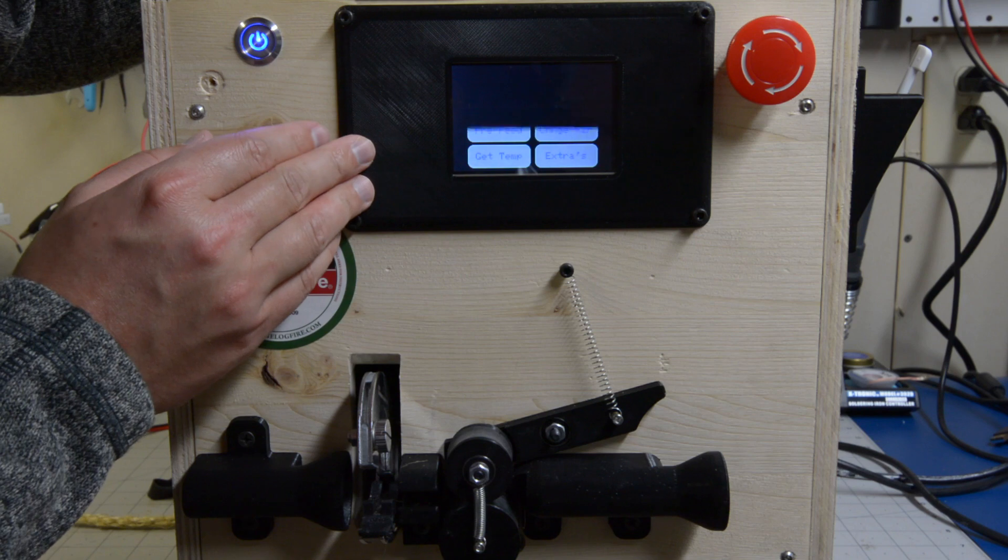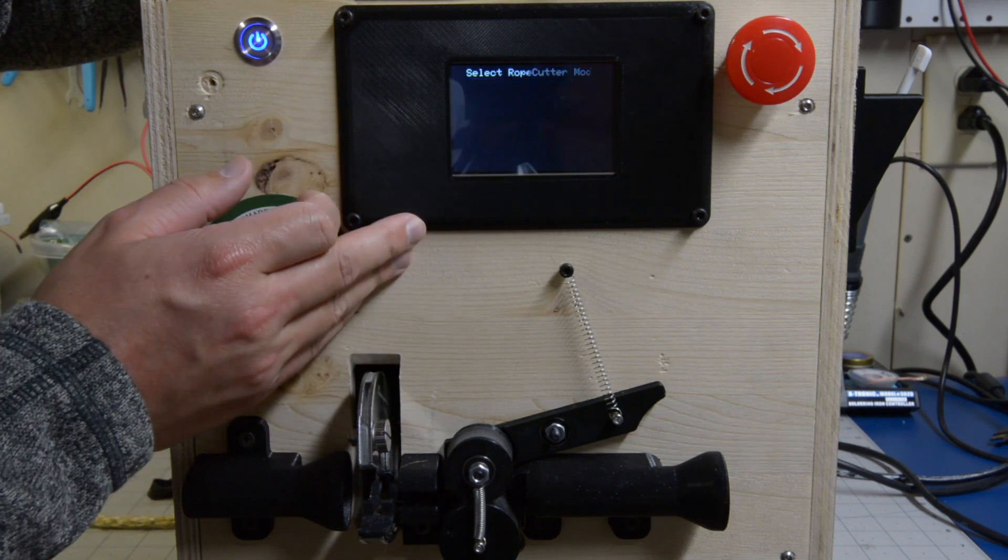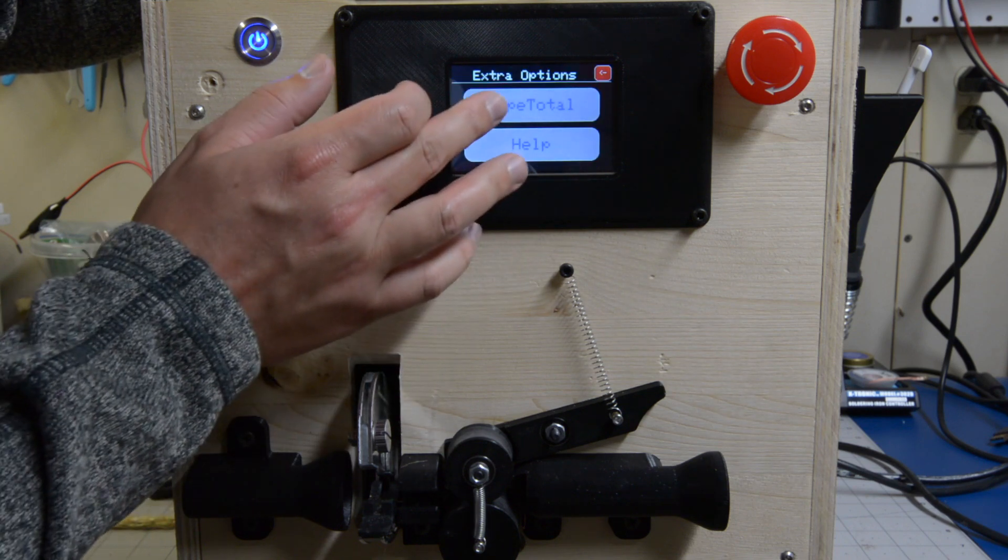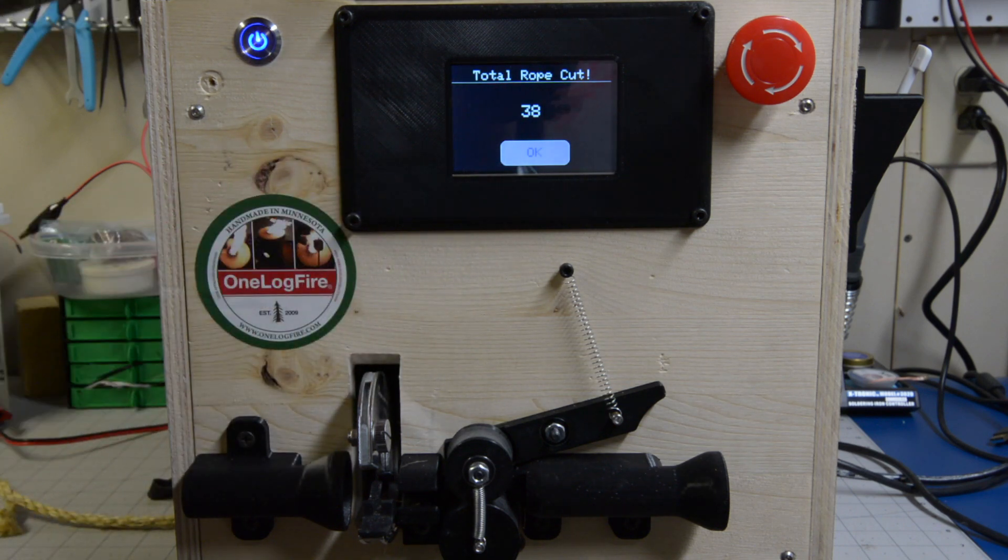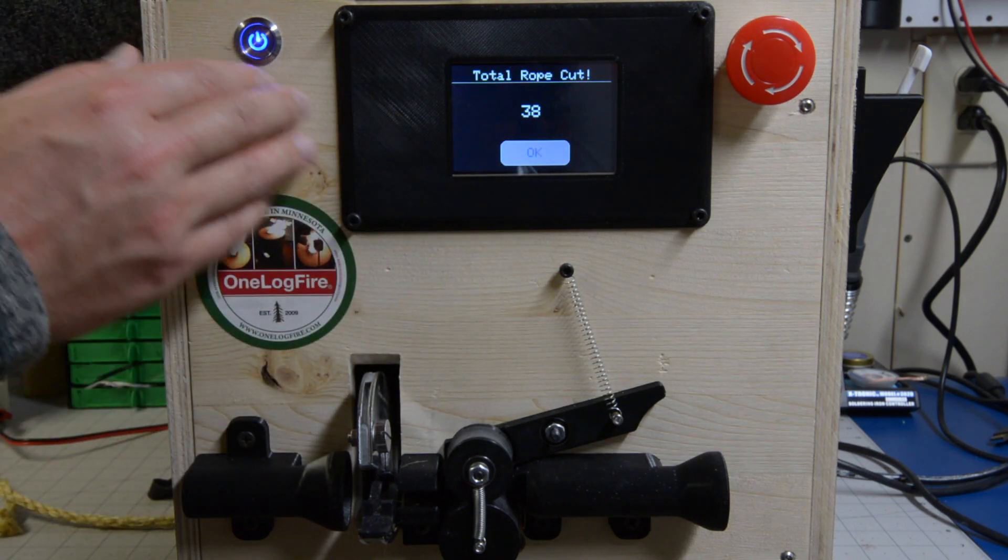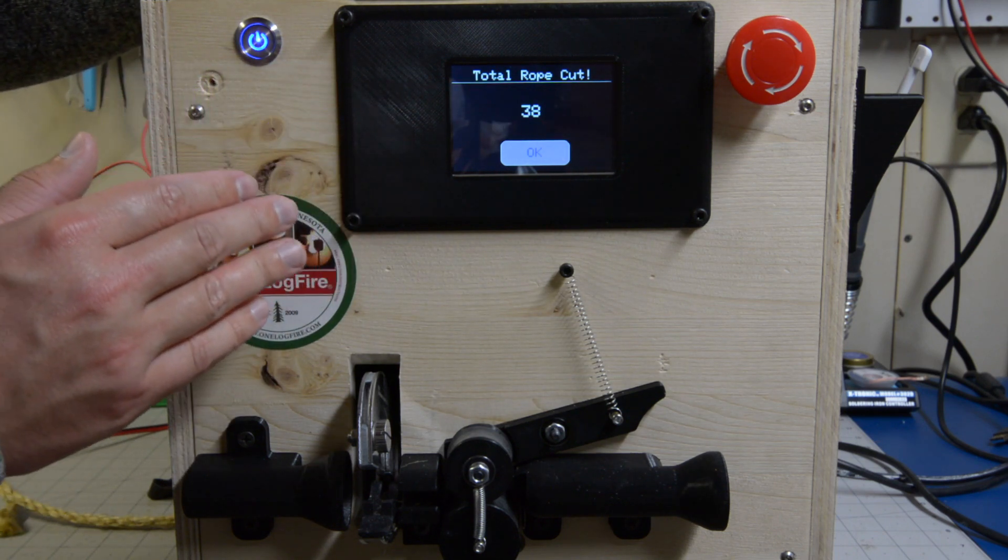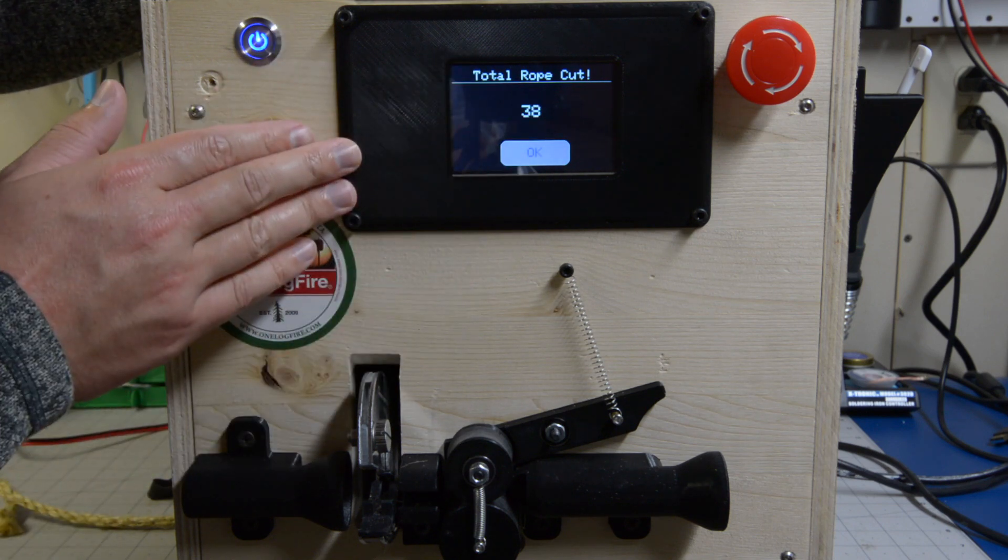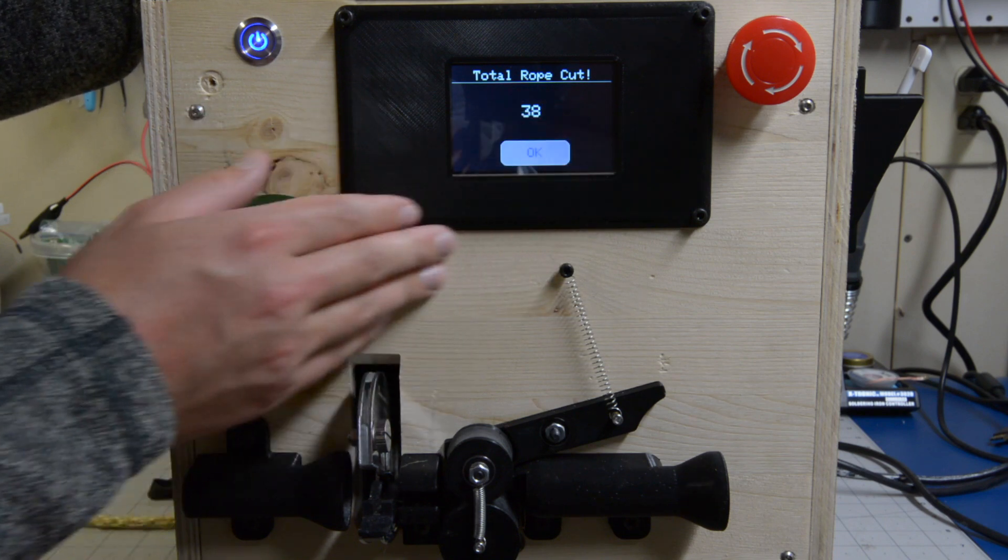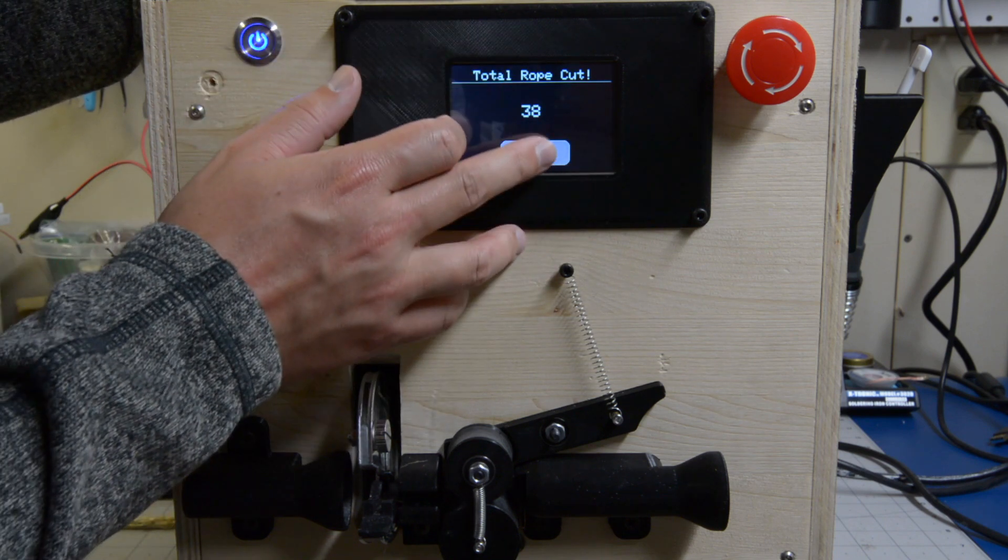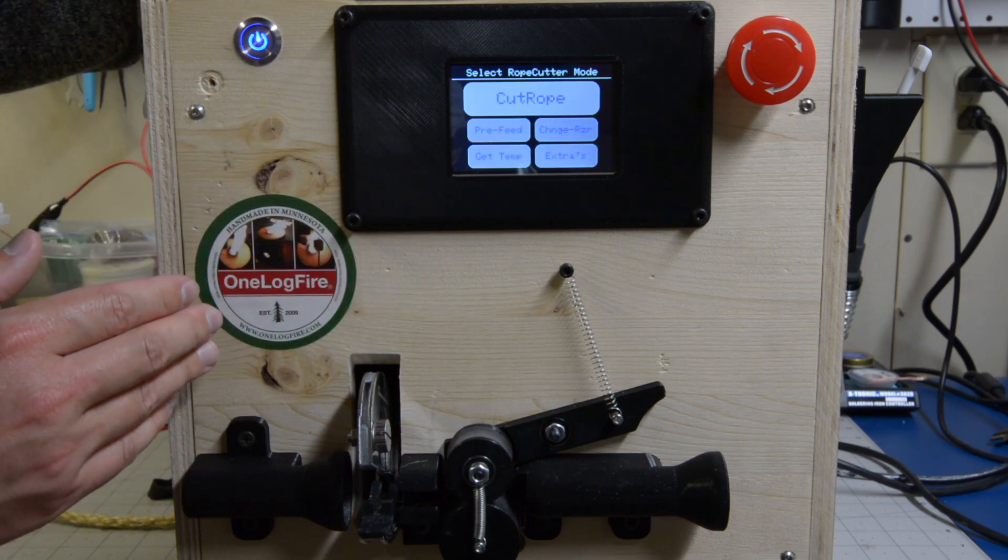A get temperature option which displays the internal temperature of the rope cutter. And our extra options that we included was a rope total option. This is the total amount of rope that have ever been cut by the automatic rope cutter. It's saved into an SD card so it is non-volatile memory. So power cycles, unplugging this, this number will always stay and displays the total amount. Before we ship off this product we'll clear this to zero and the user can then see the total amount of rope this cutter has ever produced.